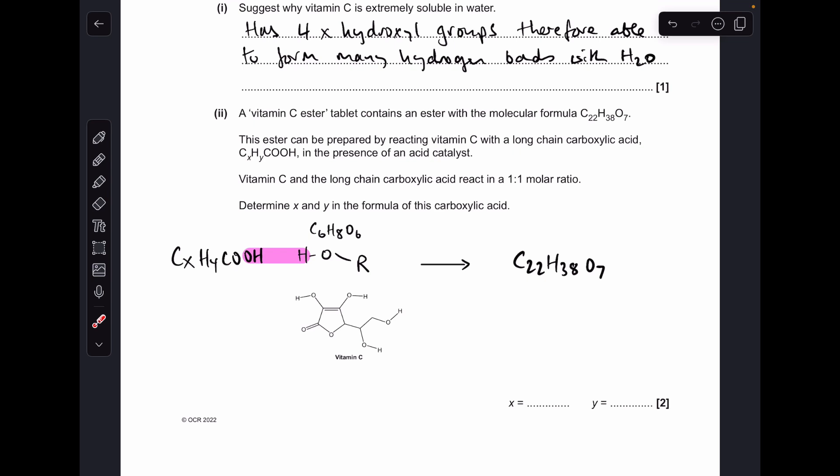In terms of the hydrogens, same sort of format: we know there are 38 in the ester, 8 in the vitamin C, but one of them is going to disappear in the esterification reaction as part of the H2O molecule. So we take 7 from the 38, and that tells us how many must have been in the carboxylic acid. The answer is 31.